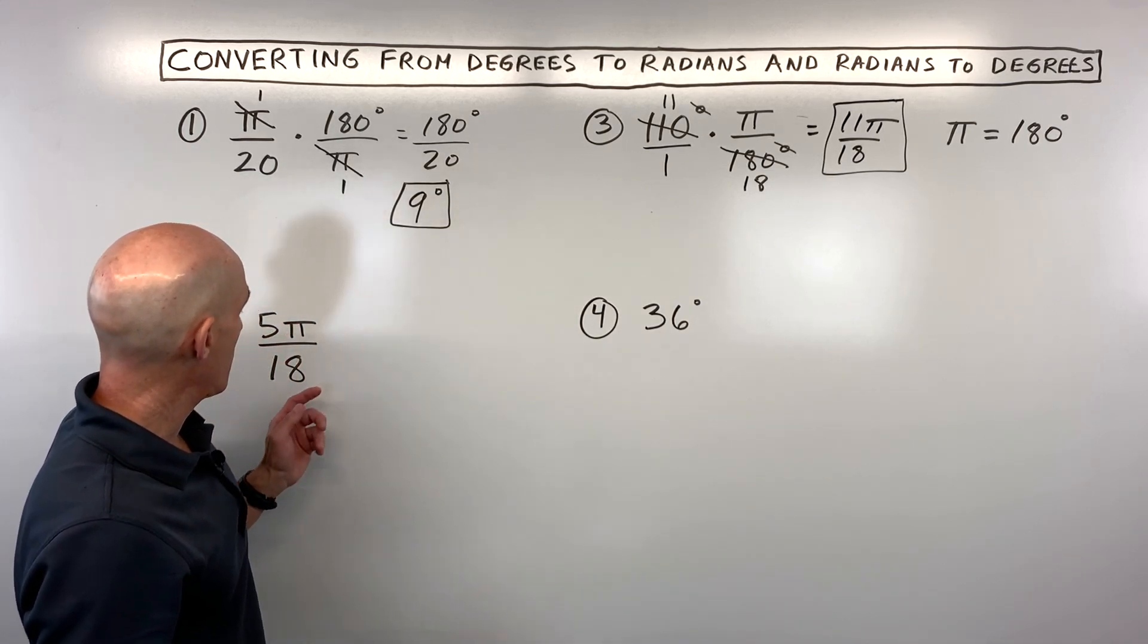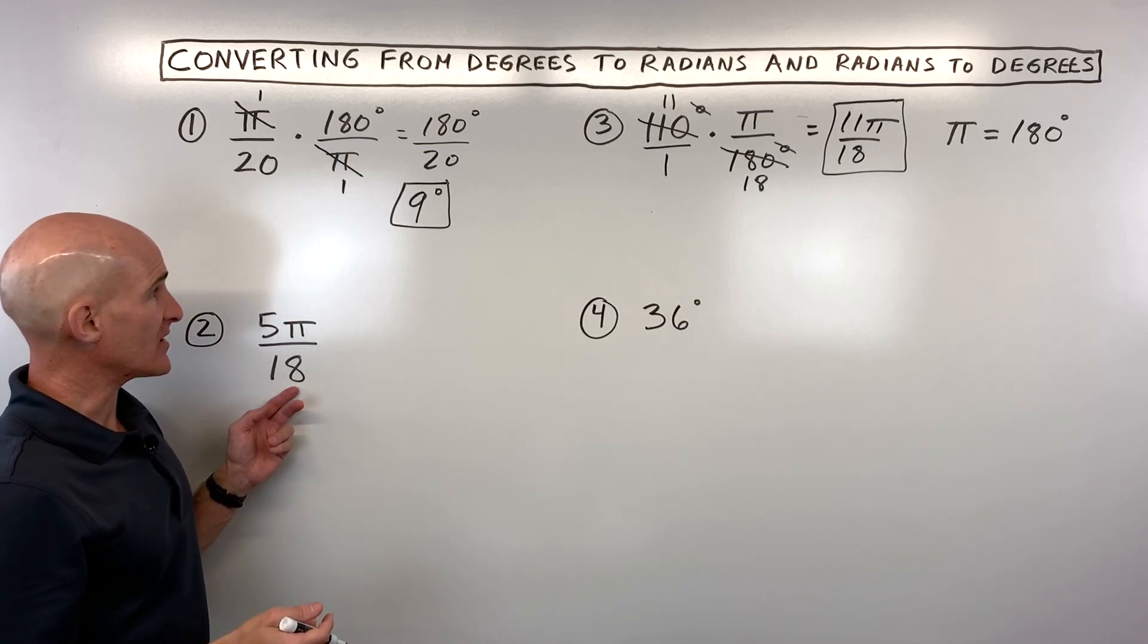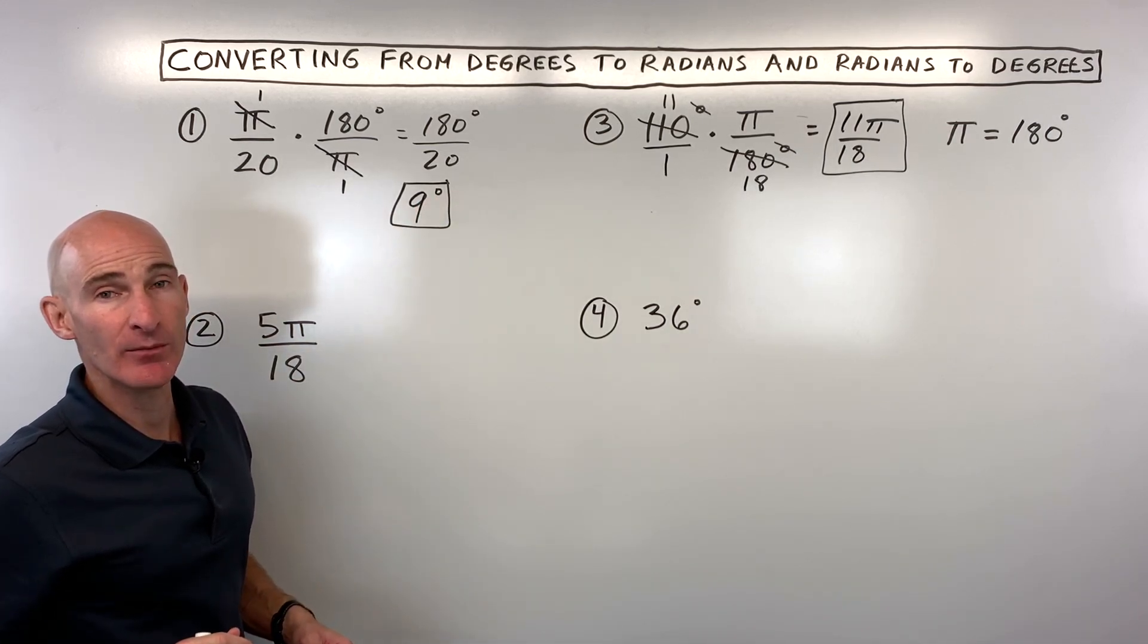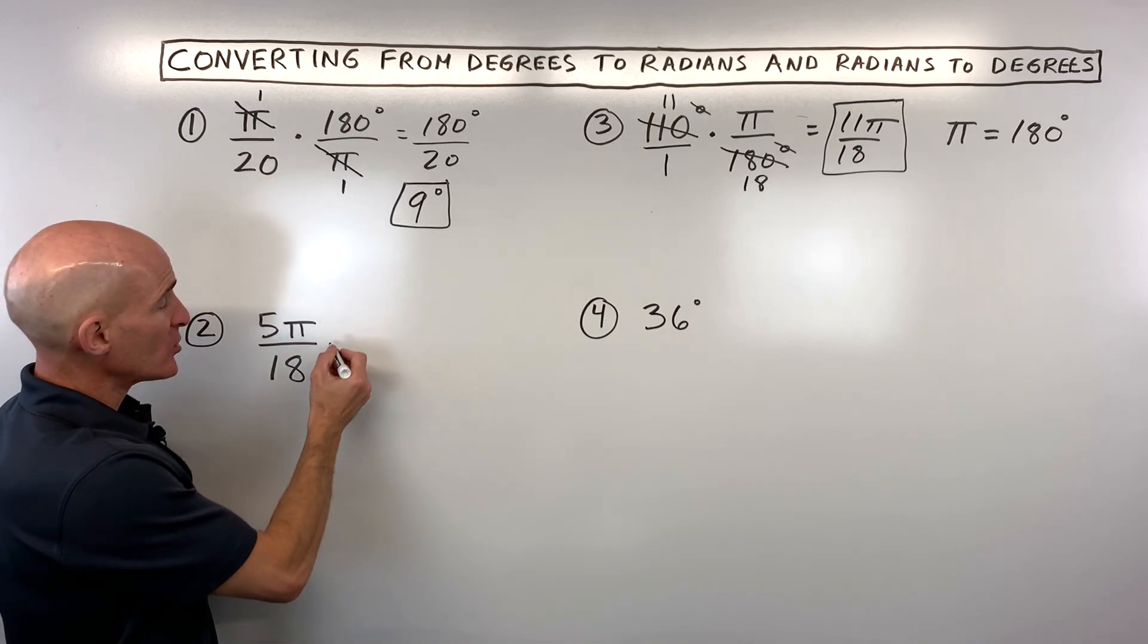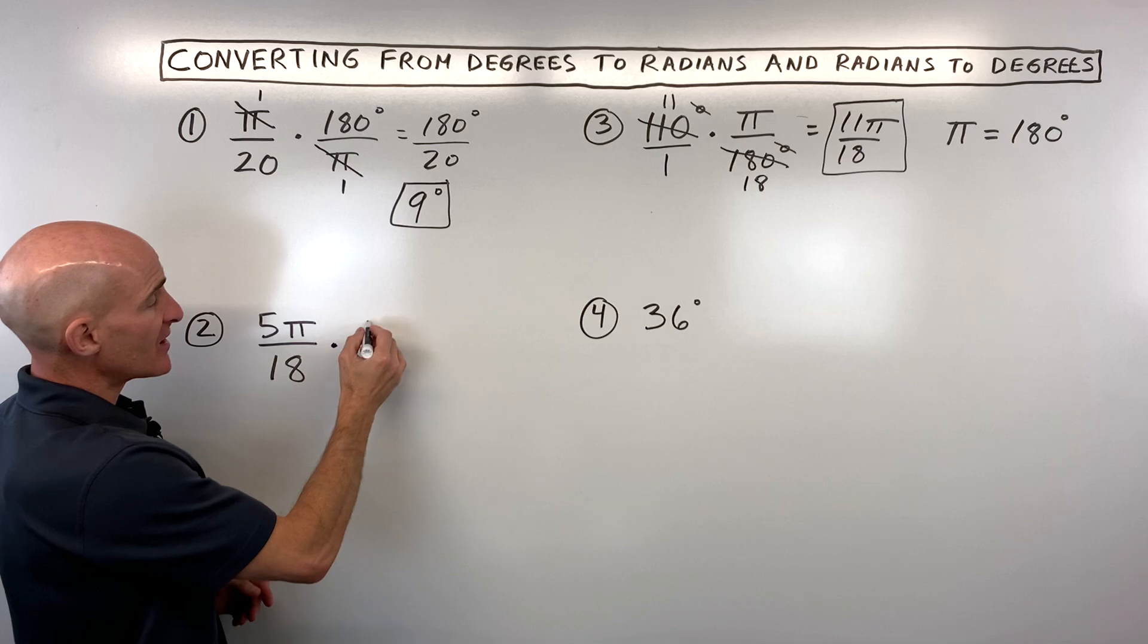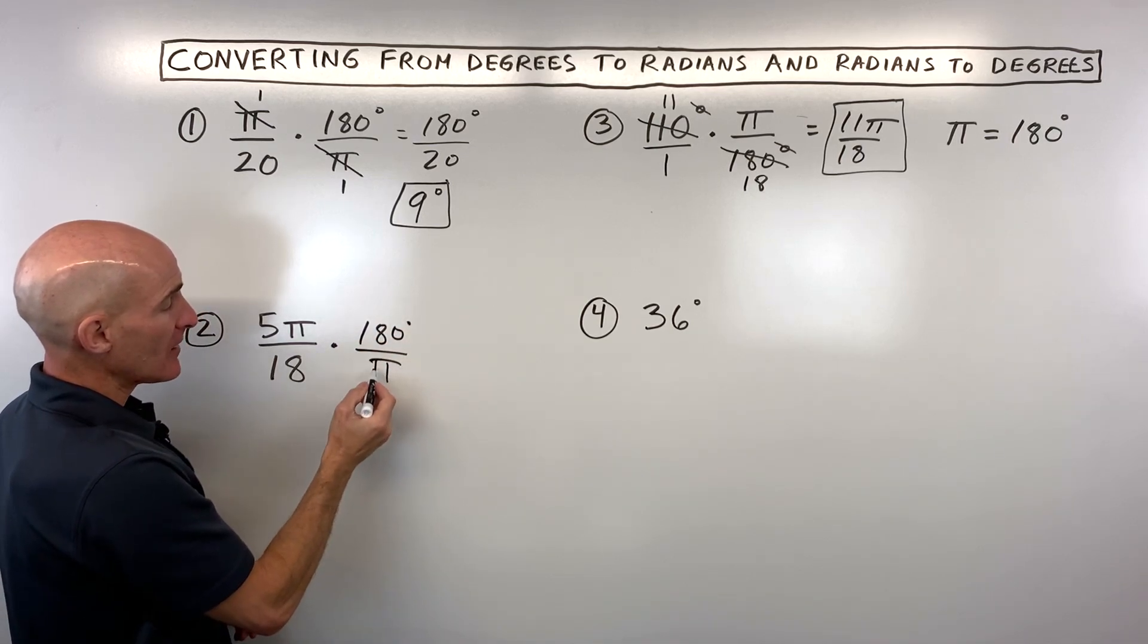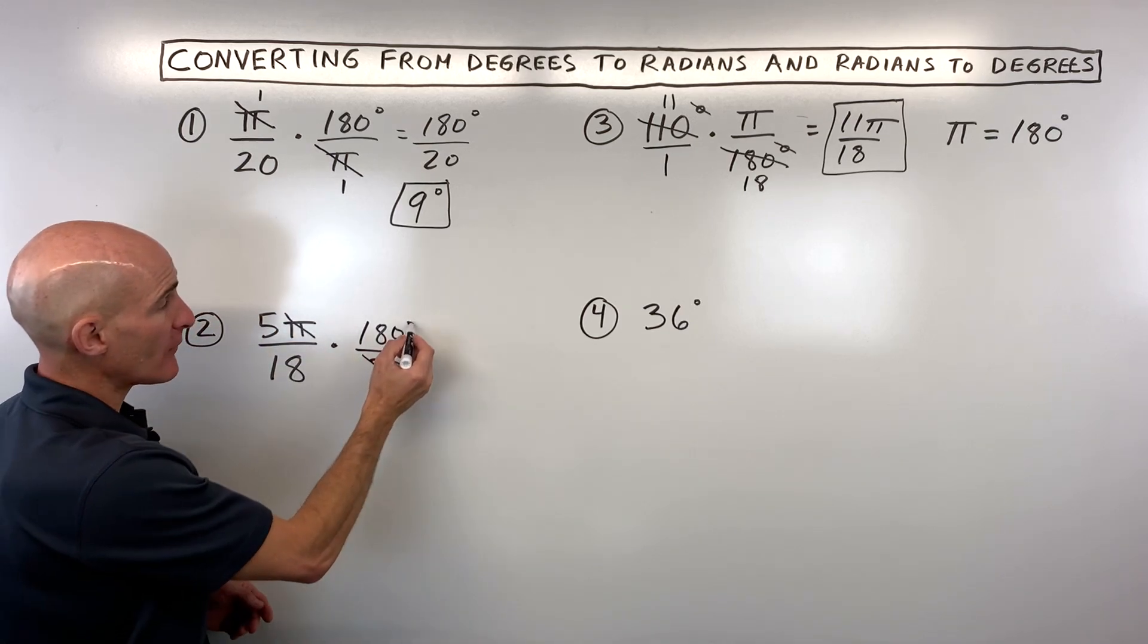Let's look at another example. So here we're given radians. Now you might be saying, Mario, how do you know that this is in radians? Well, you'll know if it's in degrees because you'll see that little degree unit symbol. If it doesn't have that, then you know that it's going to be in radians. And so when you set this up, you're going to set it up like 180 divided by pi. This way, the pi in the denominator cancels with the pi in the numerator.